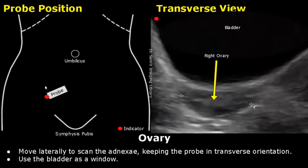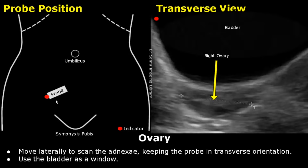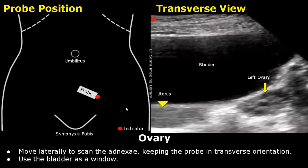Move laterally to scan the right ovary. By using the bladder as a window, you will find the right ovary at this location. You can rotate the probe in an oblique orientation if there is some difficulty in locating the ovary. Now move to the left side to scan the left ovary in transverse view. This is the left ovary near the uterus in transverse plane.